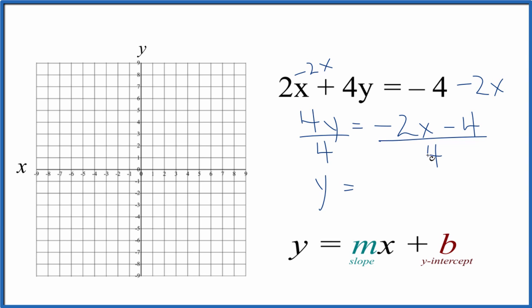And then negative 2 over 4, that would be negative 1x over 2. And negative 4 over 4 is just negative 1.